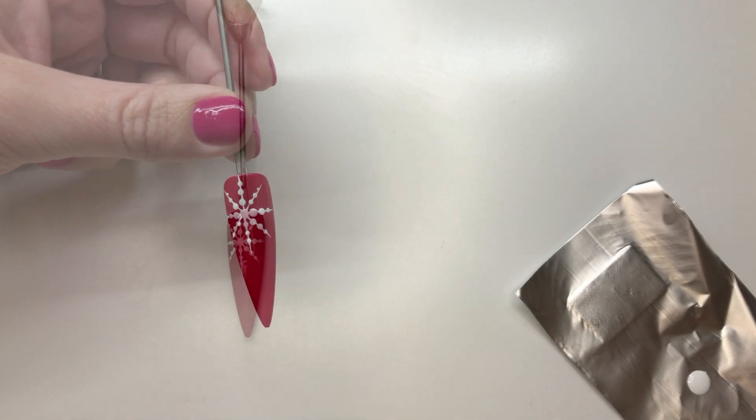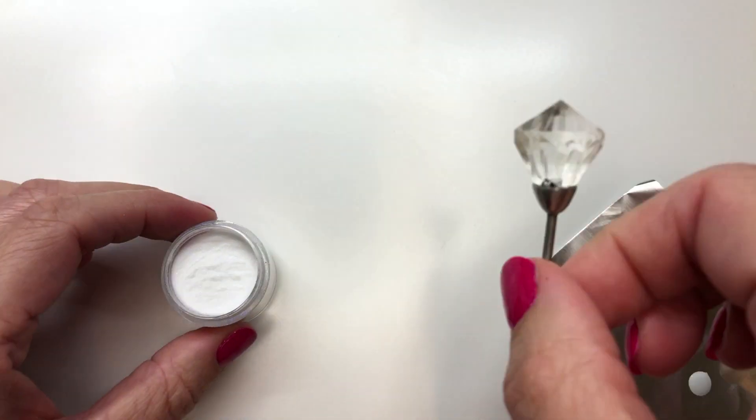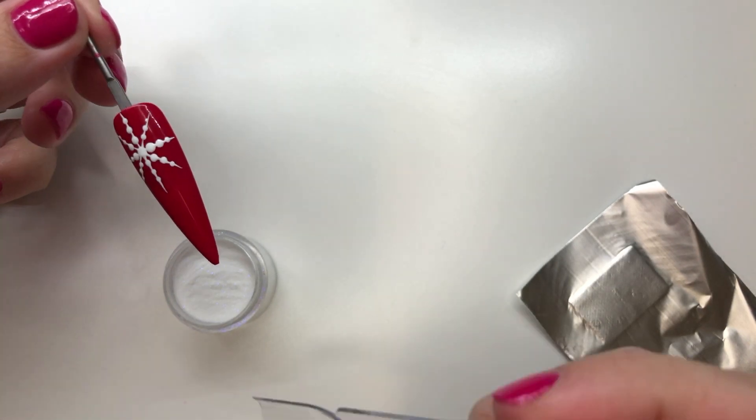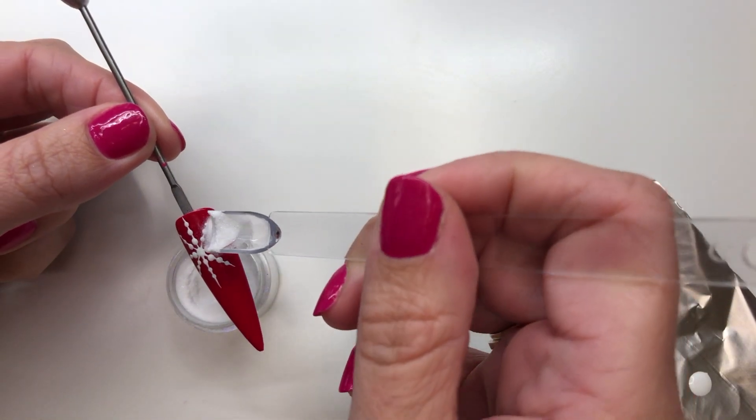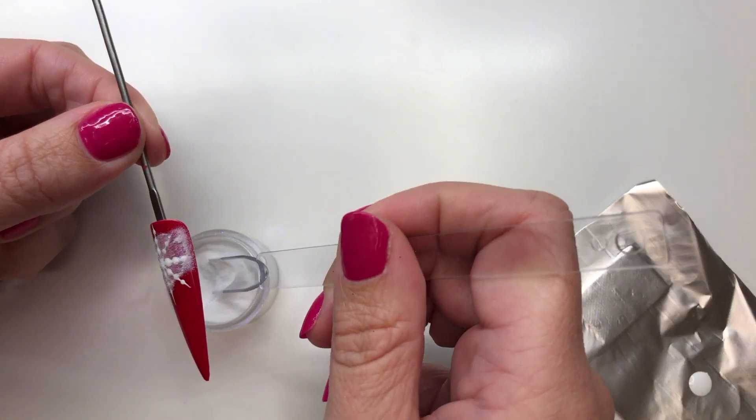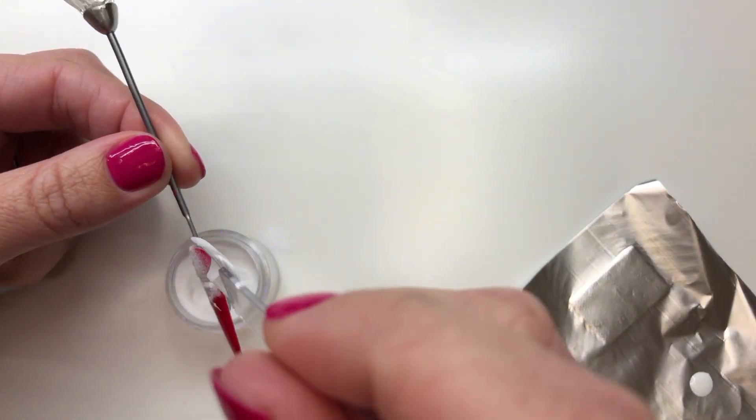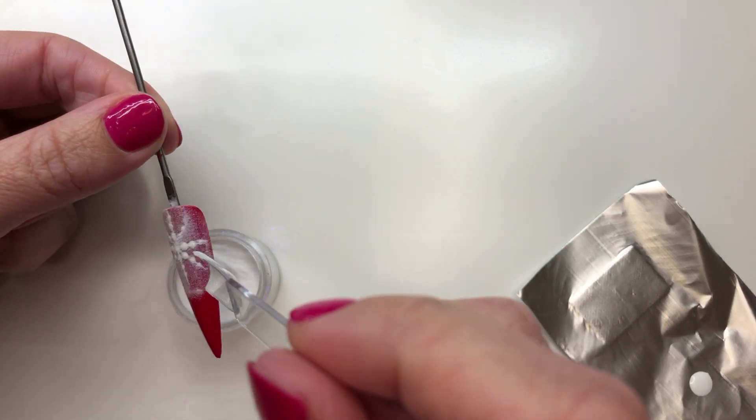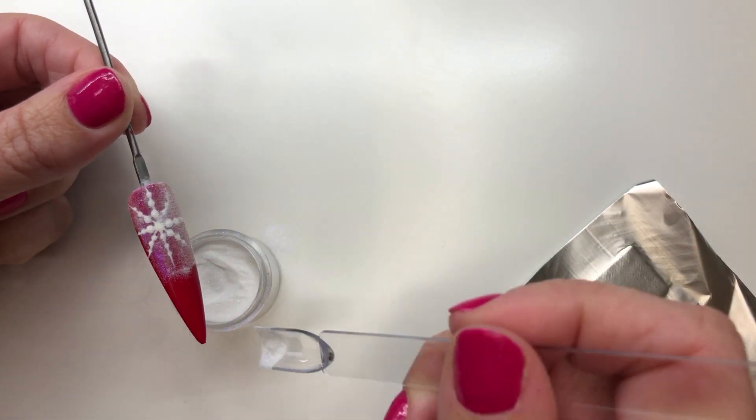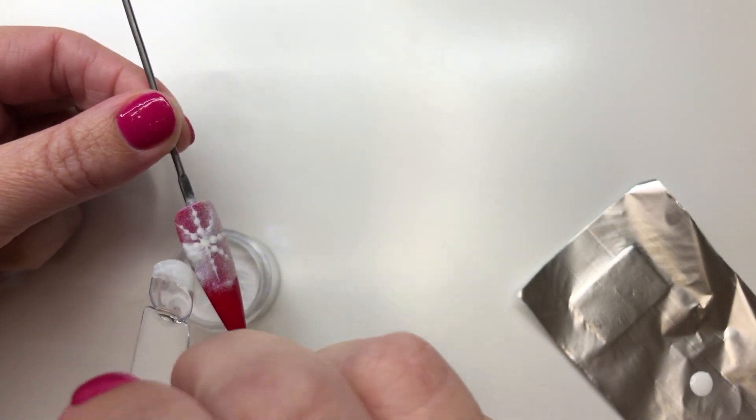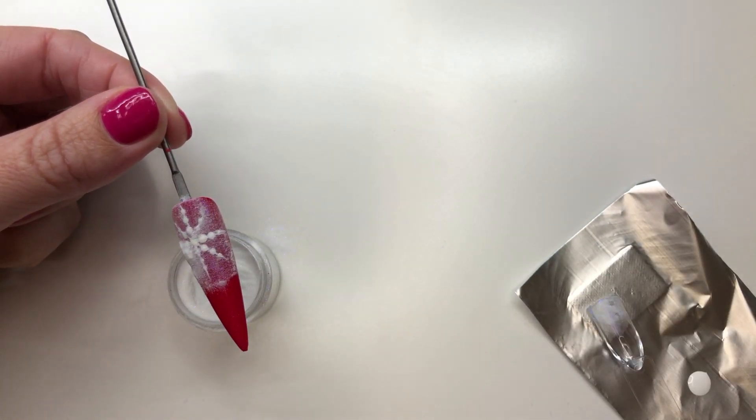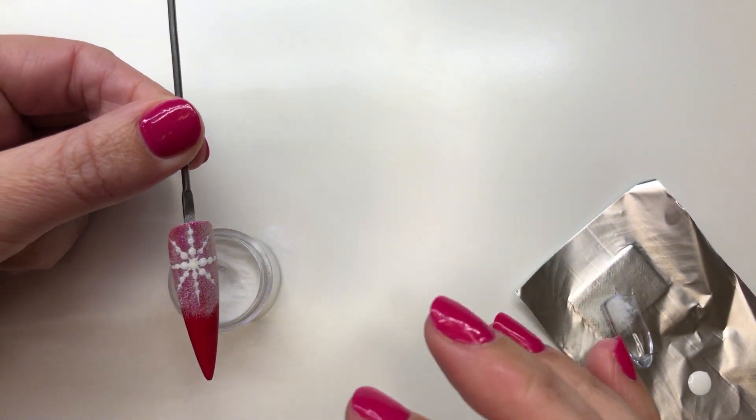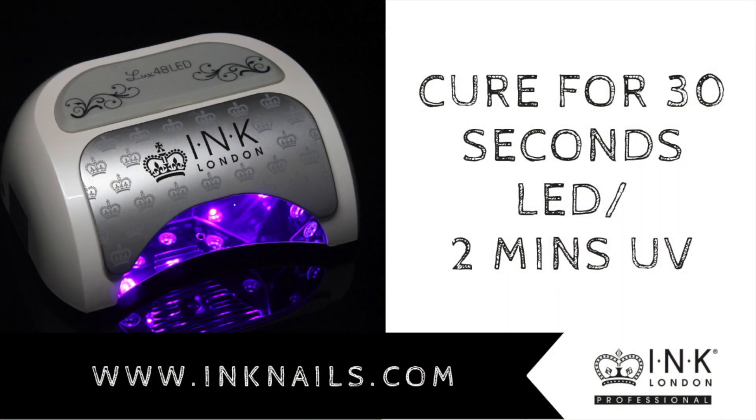Once you have done that, get your Ellie Olivia glitter. I've used a clean color pop as my scoop. Scoop the glitter over your design, being careful not to touch your design with your scoop. Make sure all of your design is covered well with the glitter, then lightly tap off the excess and pop it into your Ink lamp to cure.